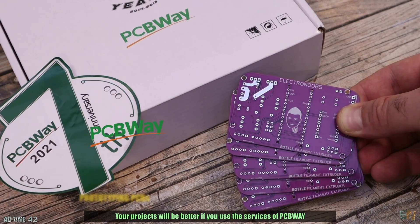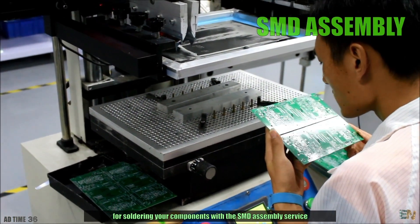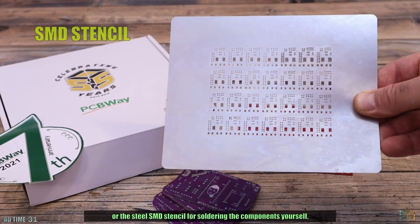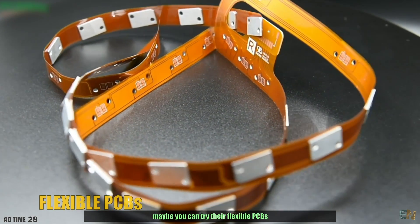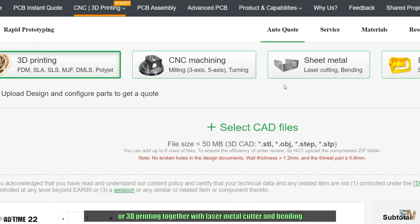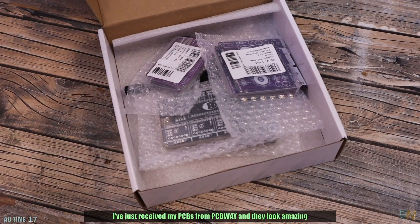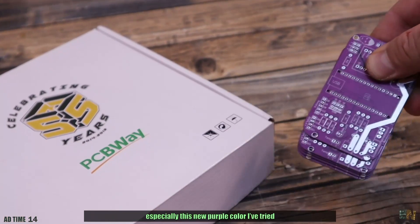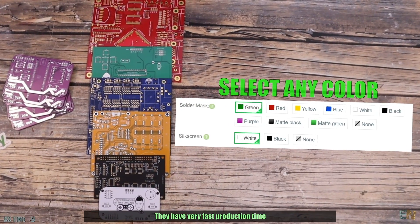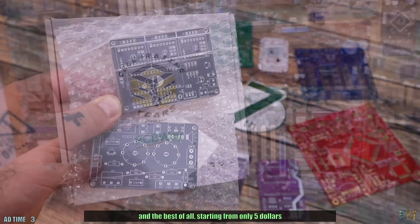Your projects will be a lot better if you use the services from PCBWay for prototyping boards, for soldering your components with the SMD assembly service or the steel SMD stencil for soldering the components yourself. Or maybe you want to try their flexible PCBs or the new services with 10% discount for CNC machining or 3D printing together with laser metal cutter and bending and also mold injection parts. I've just received my PCBs from PCBWay and they look amazing, especially with this new purple color that I've tried, but you can select any other color from this list. They have a very fast production time so you can have your boards in less than 10 days, and the best of all starting from only $5.